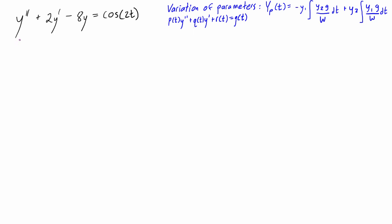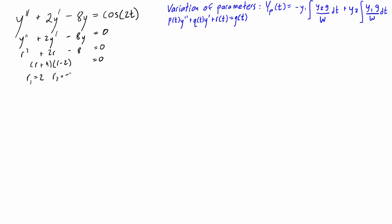To find the complementary solution, we write the homogeneous differential equation associated with the original one — basically we set the left-hand side equal to zero. Then we can write the characteristic equation, which is r² + 2r − 8 = 0. We can factor this as (r + 4)(r − 2) = 0, so our roots are r = 2 and r = −4.